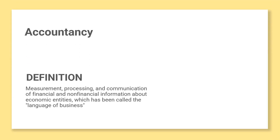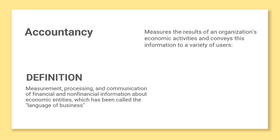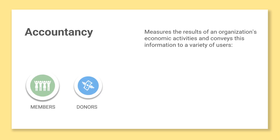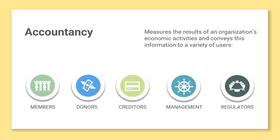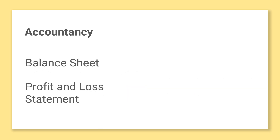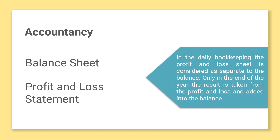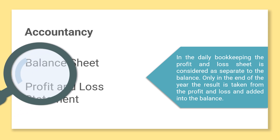Accountancy is the measurement, processing and communication of financial and non-financial information about economic entities such as your NGO. Accounting, which has been called the language of business, measures the results of an organisation's economic activities and conveys this information to a variety of users, including members, donors, creditors, management and regulators. As we have already discussed, the accounts consist of two parts: balance sheet and profit and loss statement. In the daily bookkeeping, the profit and loss sheet is considered as separate from the balance. Only at the end of the year, the result is taken from the profit and loss and added into the balance.